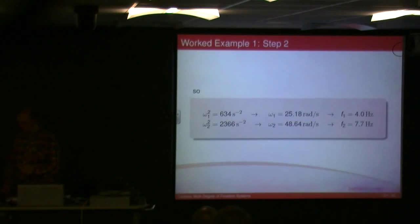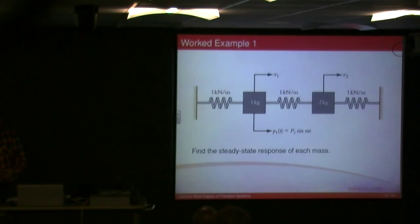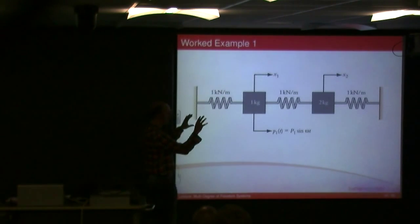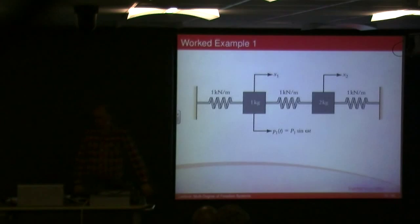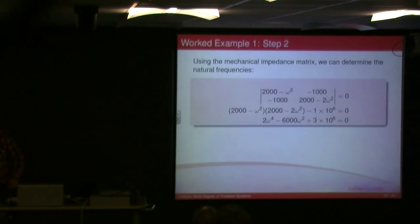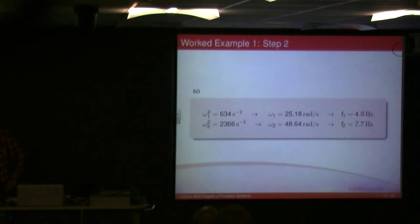And so if I had my system, and I was driving it at 4 hertz, I'd get one natural frequency. You can imagine with such a system, you might get the modes oscillating like this, the other mode would be oscillating like this, and one would be at 4 hertz and one would be at 7.7 hertz. So that's my natural frequencies.